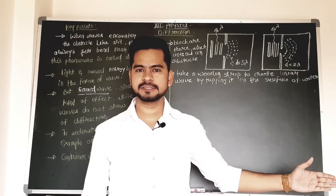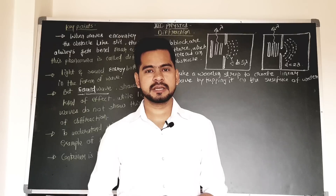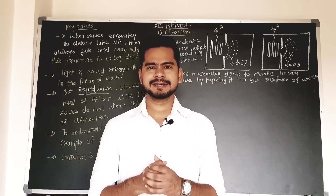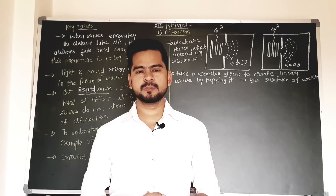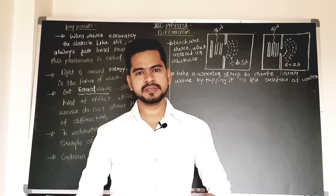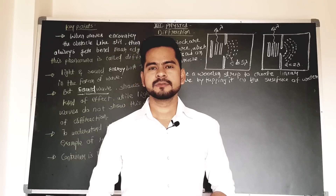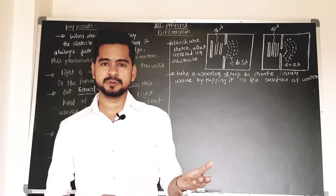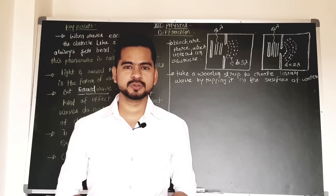Before I start this class, let's talk about the previous lecture. We were discussing about interference. The very first question you should think about is: what is interference? Interference means it is a kind of physical effect produced by the superposition of two waves at a single point. Such a physical effect is called interference, and it can be of two types: constructive interference and destructive interference.